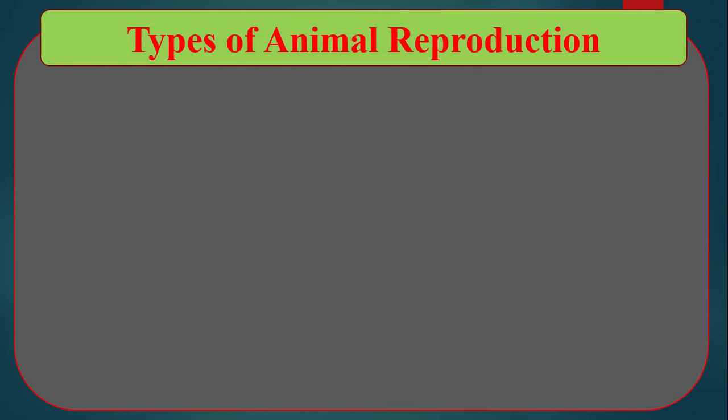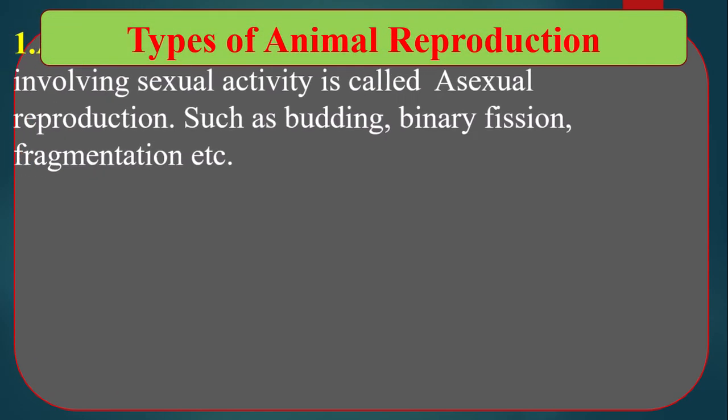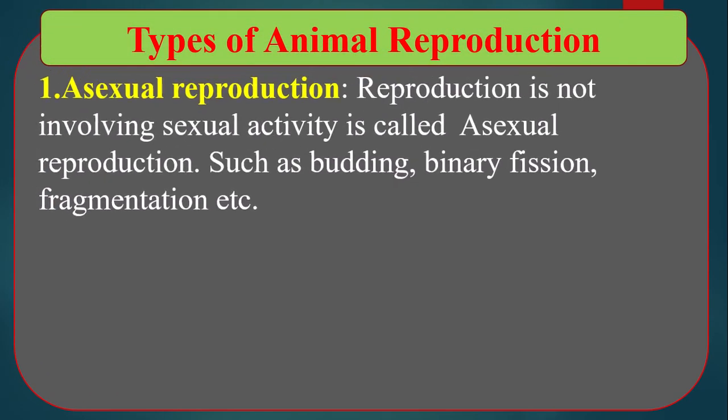Types of Animal Reproduction. There are two types of animal reproduction. Number one, asexual reproduction. Number two, sexual reproduction.